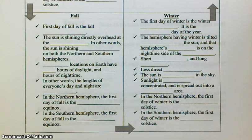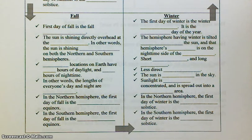In other words, the lengths of everyone's day and night are equal. In the northern hemisphere, the first day of fall is the September equinox. In the southern hemisphere, the first day of fall is the March equinox.